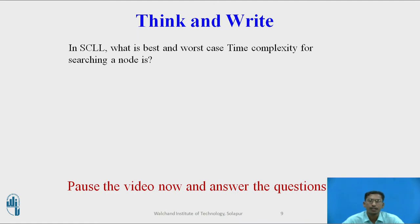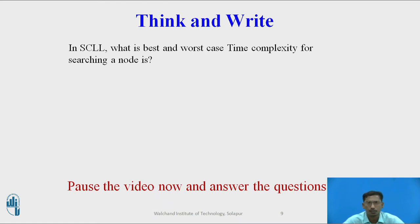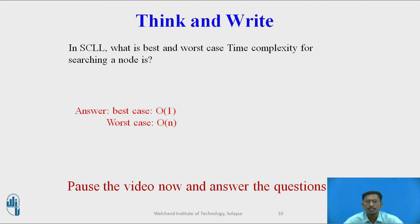You can pause the video and answer: in a singly circular linked list, what is the best and worst case time complexity for searching a node? The answer: best case is O(1) and worst case is O(n).